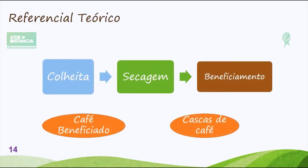No processo do café, o café vai sofrer o processo de colheita, secagem e, por fim, beneficiamento. No beneficiamento, eu vou ter basicamente dois produtos: o café beneficiado para venda e as cascas de café, que é o resíduo orgânico desse processo. Do café produzido, cerca de 50% é casca de café. Considerando que o Brasil é o maior produtor de café do mundo, podemos ter uma visão do quanto de casca está sendo gerado nesse processo.